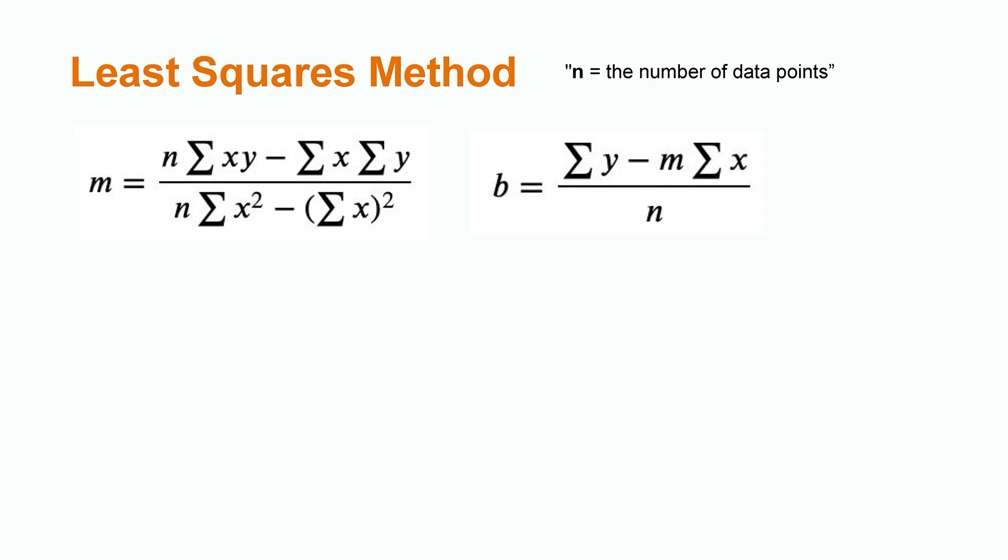Luckily for us, there are formulas that allow us to calculate the optimal values for both the slope and the y-intercept that minimize this total vertical distance. They look a little scary, but really all we have to do is calculate a few things and then combine them according to the formulas.